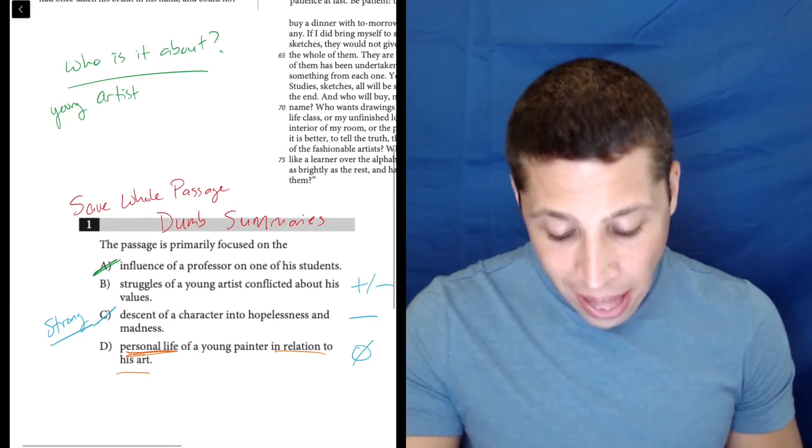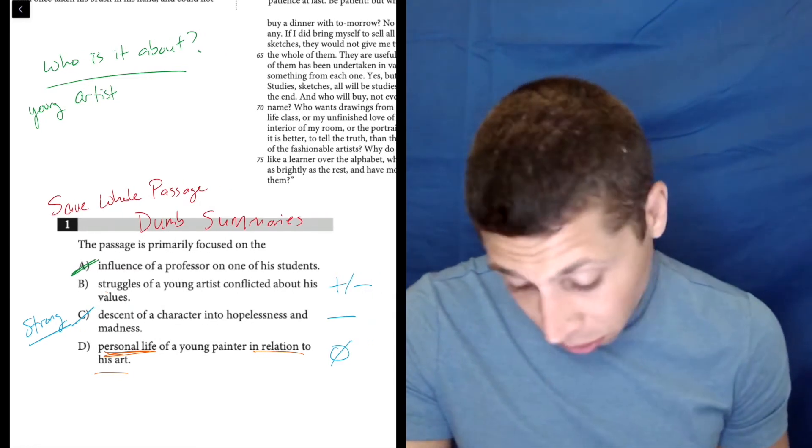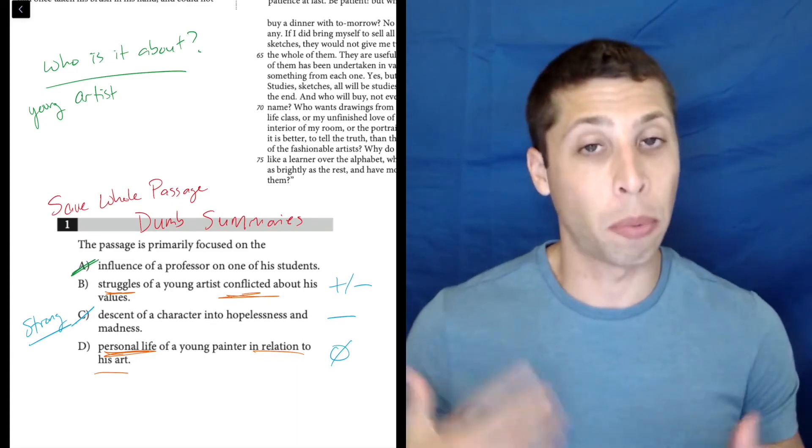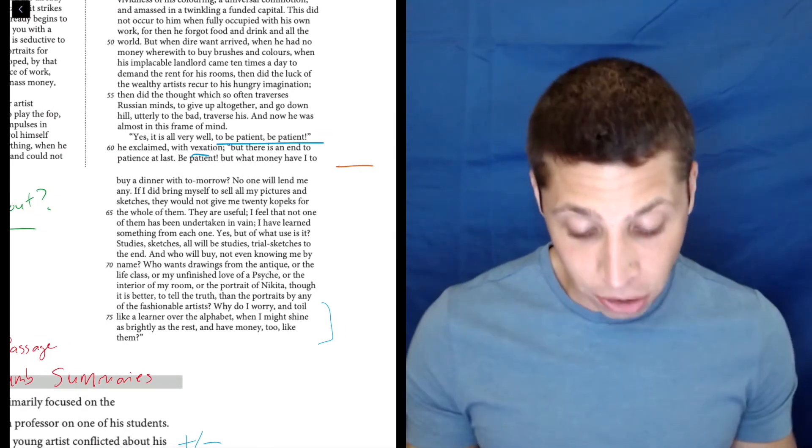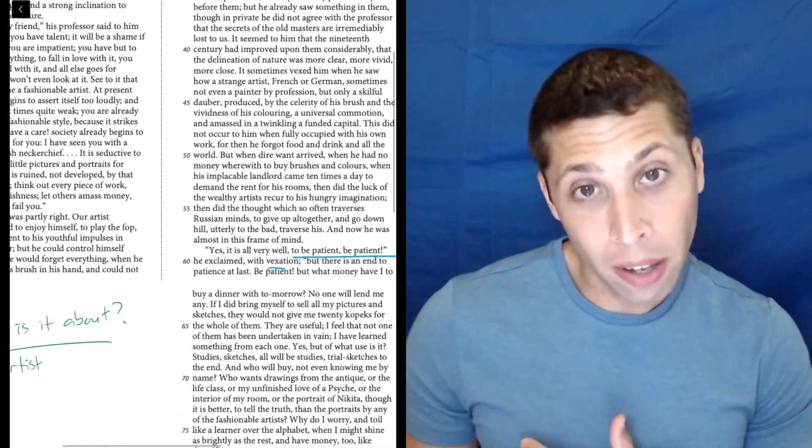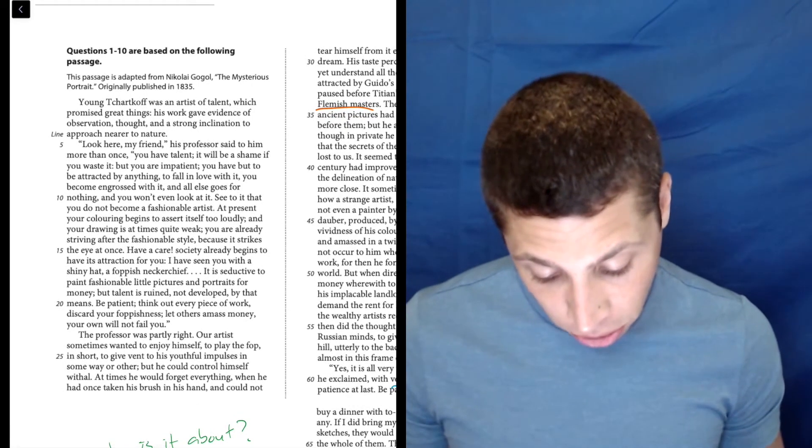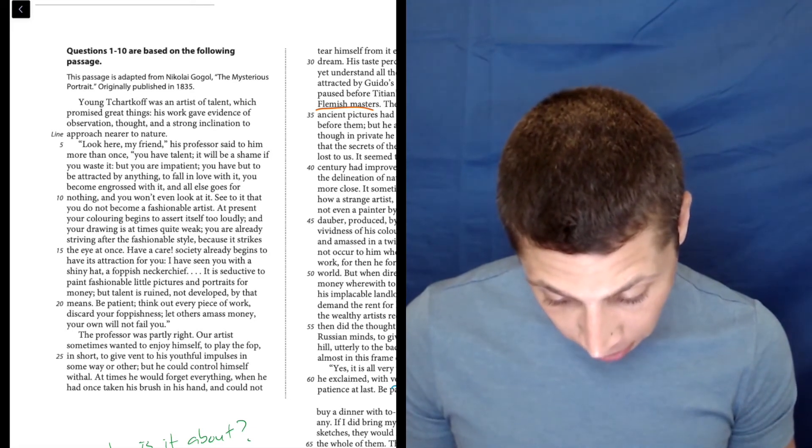And so that leaves us with B. There's a strong word here as well - 'struggles' is a strong word - but 'conflicted about his values.' We really want to be able to prove that conflict if possible. Now at the end, we see him being kind of negative and frustrated, right? 'Be patient, be patient... there's an end to patience at last.' Well, at the beginning here, remember the professor is telling him to be patient. 'You have talent.'